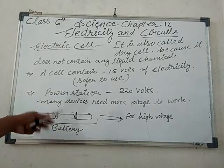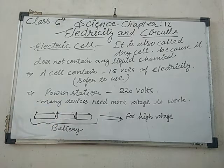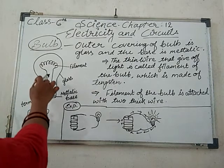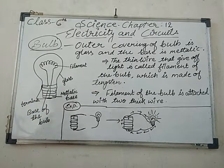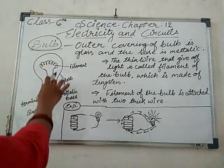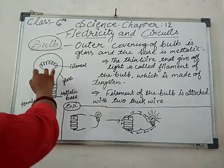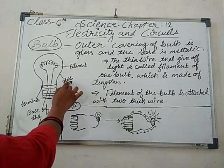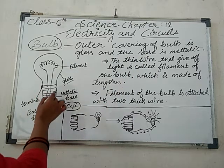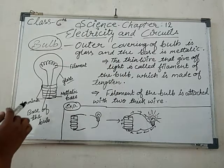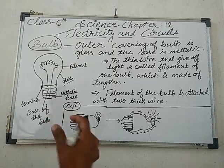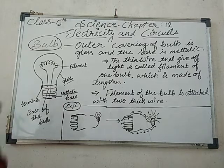Now we will discuss about the bulb. Dear students, we have generally seen this type of bulb in our houses. The outer covering of the bulb is made up of glass, and the base is metallic. Why is it called metallic? Because metal is a very good conductor of electricity that helps support the flow of electric current into the devices.